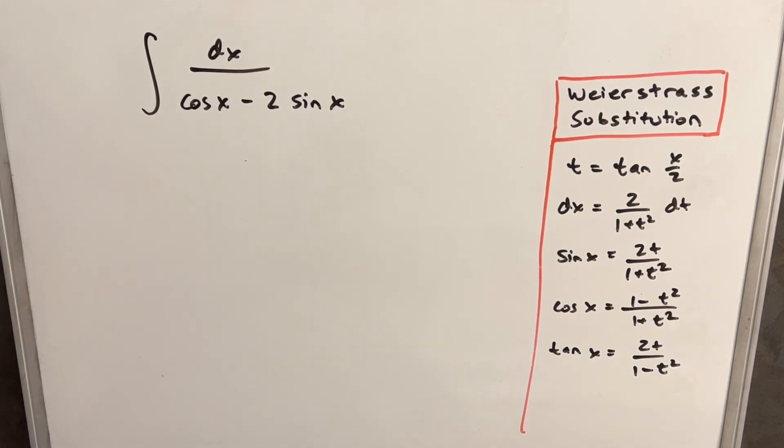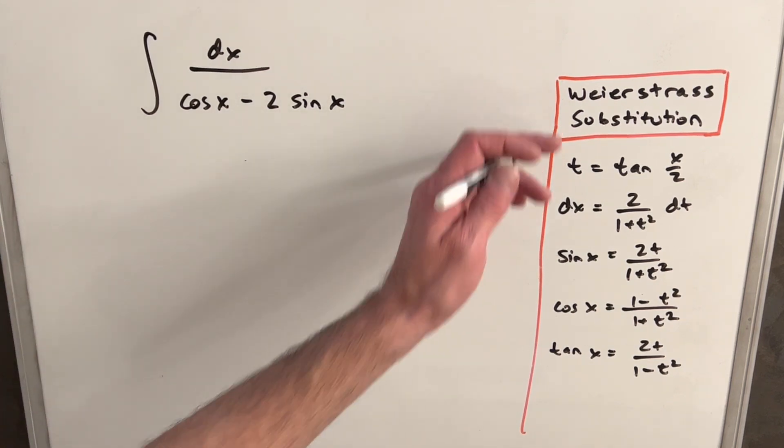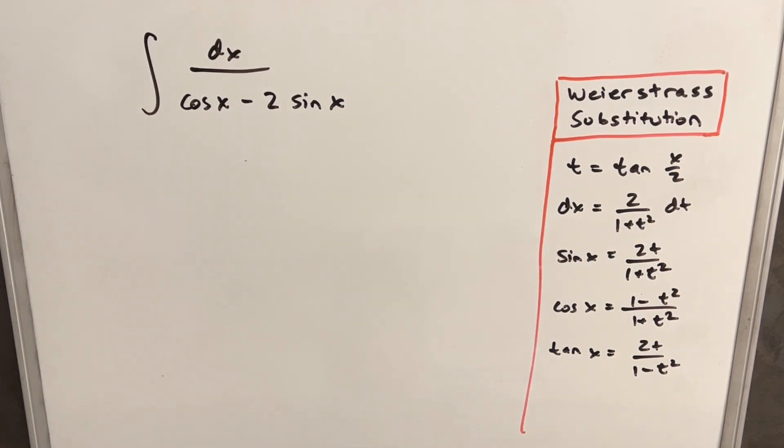We have this integral on the board: dx over cosine x minus 2 sine x. I want to solve this using Weierstrass substitution. I did an introduction video on this method a few days back. I'll provide a link in the description if you want to check that out.